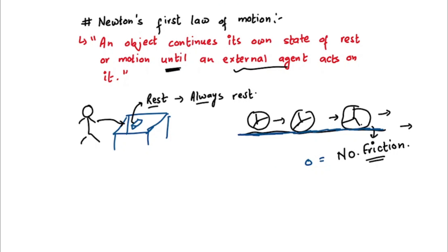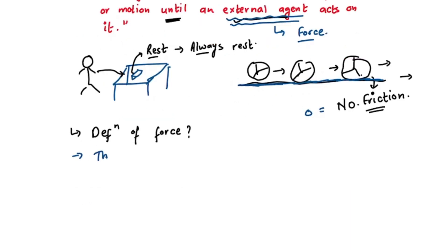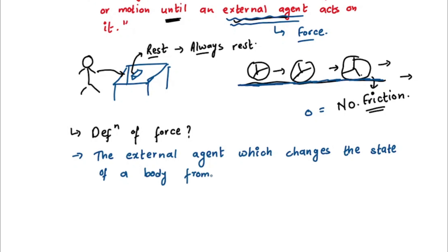Now, one interesting thing about Newton's first law of motion is that it also gives us the definition of force. So this external agent that Newton was talking about, which tries to move the object from rest to motion, or sometimes from motion to rest, is actually called force. And hence, we can define force as the external agent which changes the state of a body from rest to motion, or motion to rest.